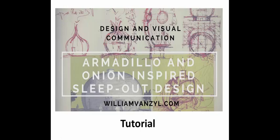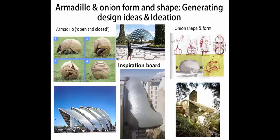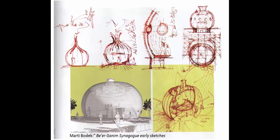The armadillo and onion inspired sleep out. This tutorial is about using the shape and form of the armadillo and an onion to inform a solution to their design brief. A quick overview: we're going to look at ideation - looking at the shapes and forms of the armadillo and the onion, merging them, and using them to get to a solution. We'll also look at how the onion's form could be implemented into the building.